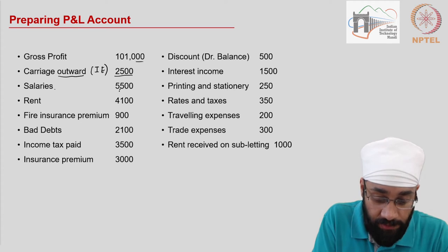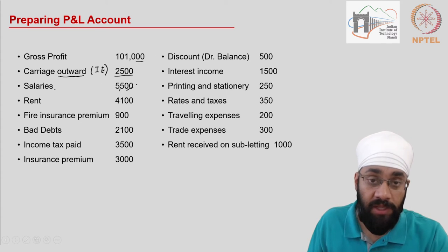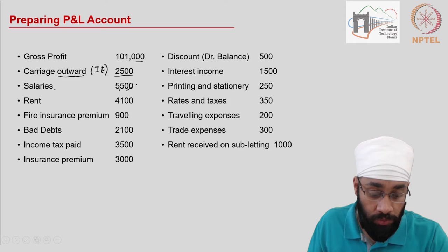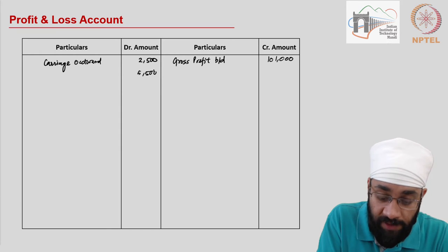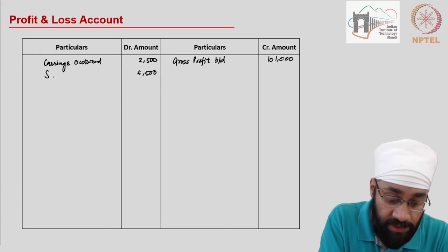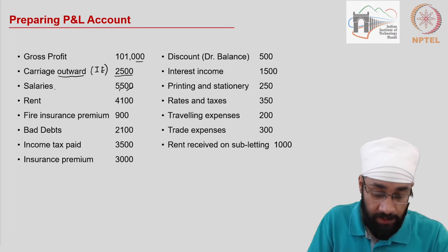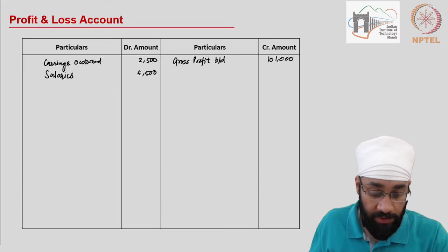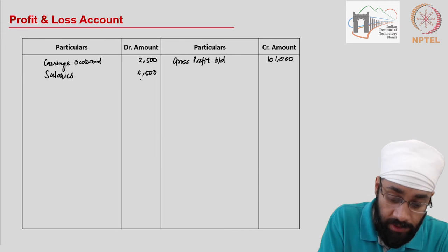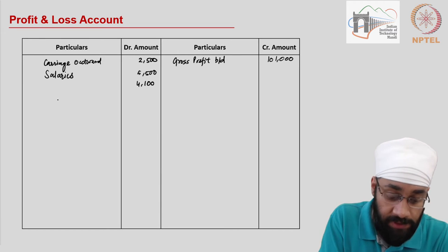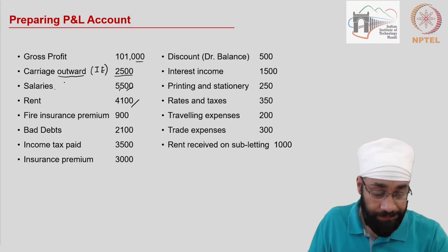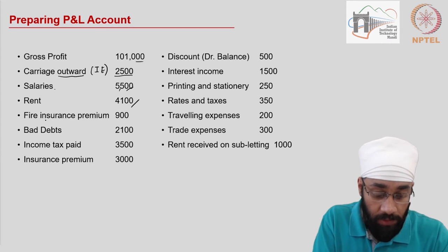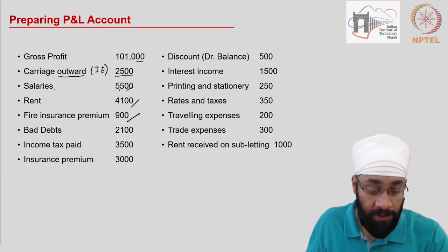Salaries are five thousand five hundred — assuming these are also indirect expenses. You have rent: four thousand one hundred, again assuming this is an indirect expense. You pay rent. Fire insurance premium: nine hundred. This is the amount you pay every year to avail the benefit of a fire insurance cover.